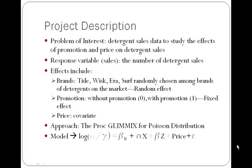Among the independent variables, there are four brands: Tide, Wisk, Era, and Surf. These four brands are randomly chosen among the brands of detergent within the nation, so they can be considered a random effect for the model. The second variable is promotion, with two levels: presence of promotion coded as 1 and lack of promotion coded as 0. Because these are the only types of promotion being investigated, this is a fixed effect. I also have a column for price, which is a continuous variable and can be considered a covariate in this model.